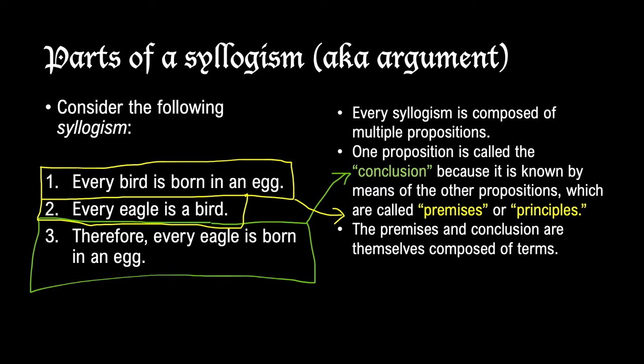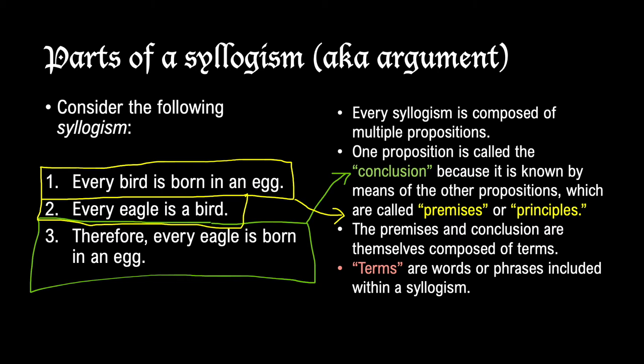The premises and conclusion are themselves composed of terms. Terms are words or phrases, not complete sentences, included within the syllogism. In the example syllogism, we have three terms: first, 'bird,' which appears twice in the premises; second, 'born in an egg,' which appears once in a premise and once in the conclusion; and finally, 'eagle,' which also appears once in a premise and once in the conclusion.